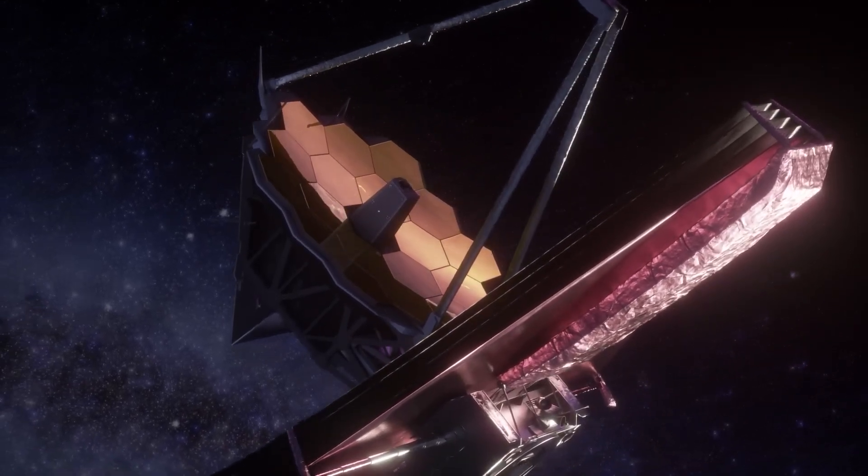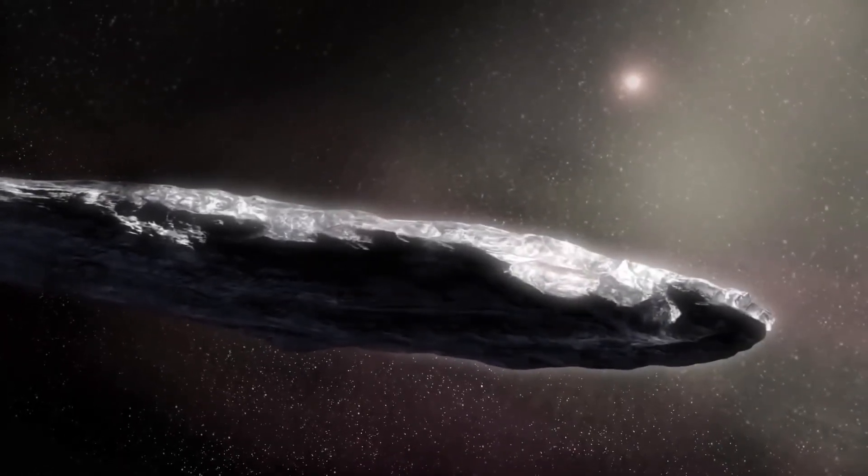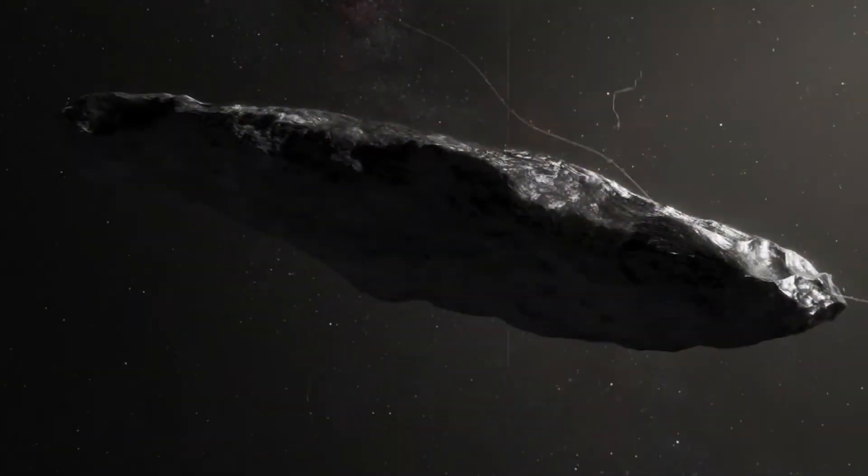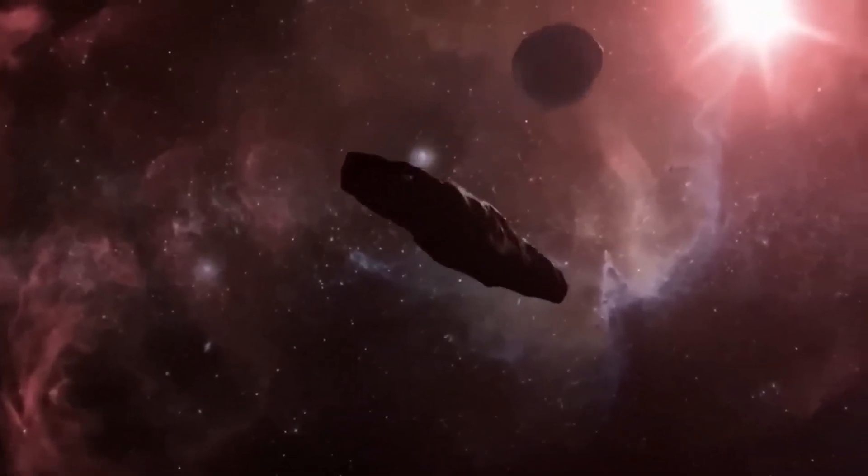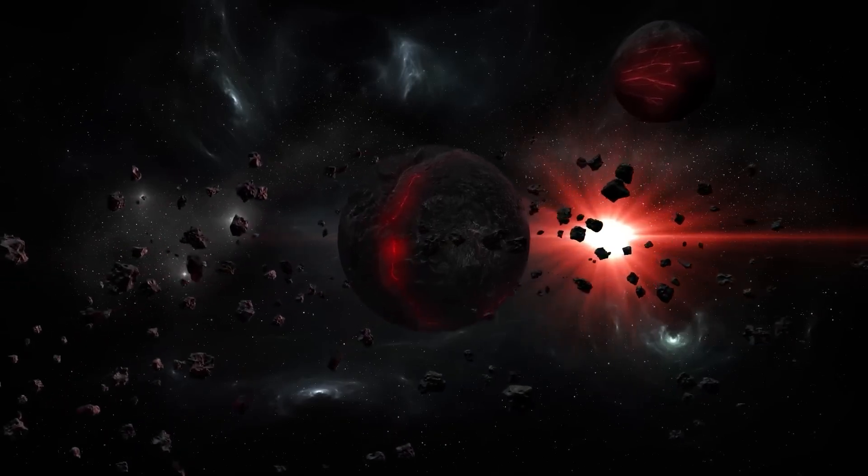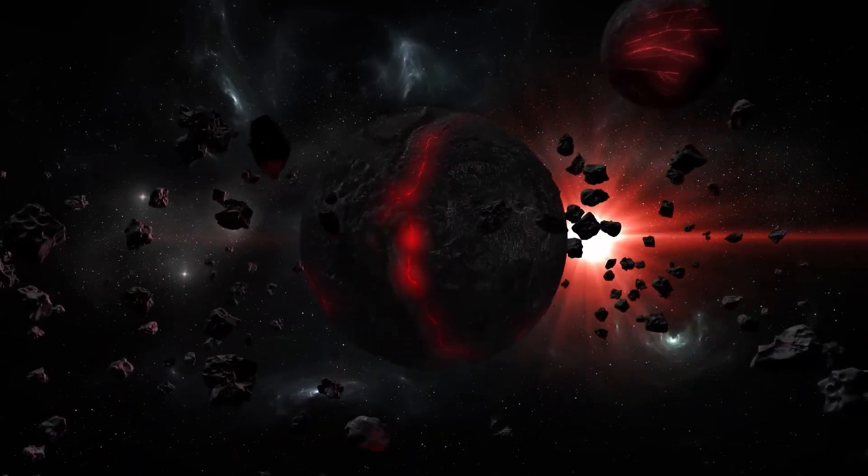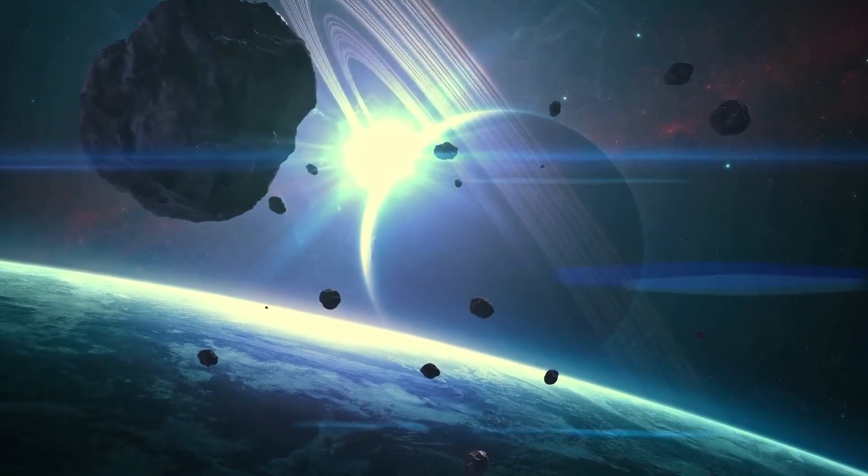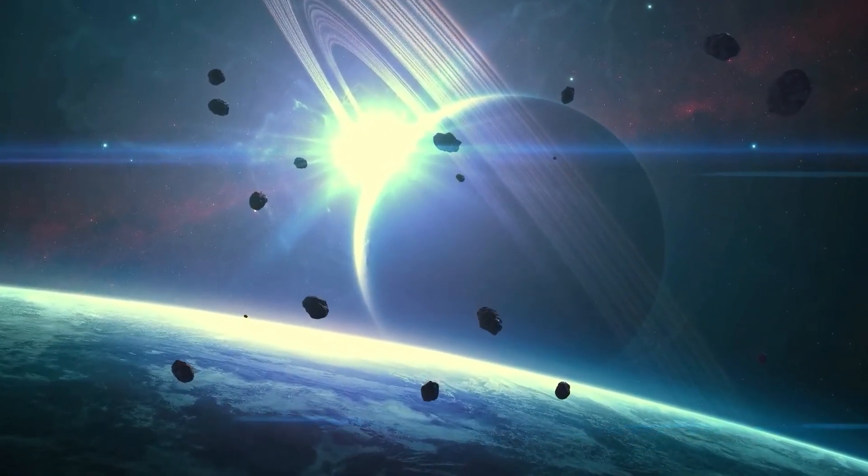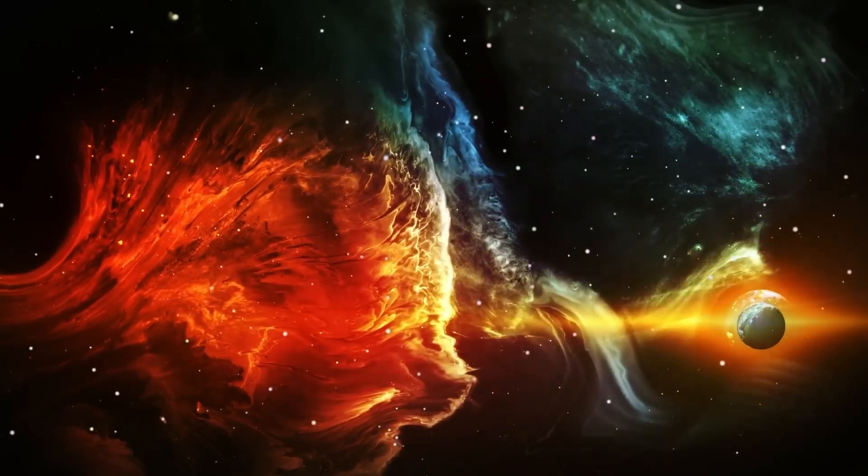Among the most fascinating findings is the presence of a highly reflective material that could explain its unusual brightness, as well as compounds that suggest that Oumuamua formed in a young, dynamic star system. These discoveries offer key clues about the processes occurring in regions of the universe where matter is organized in completely different ways than in our cosmic neighborhood.